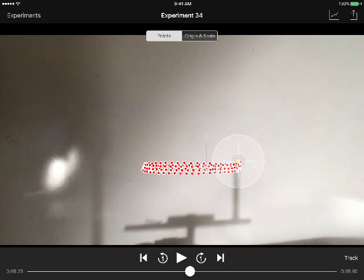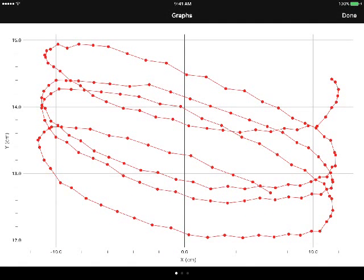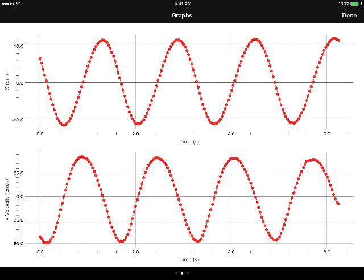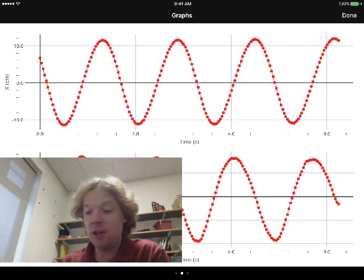So using this program I can just pull up a graph of the data. That's x versus y. But what we want to see, of course, is the position as a function of time, and that is shown right here. And as you can see, this is a perfect trig function.